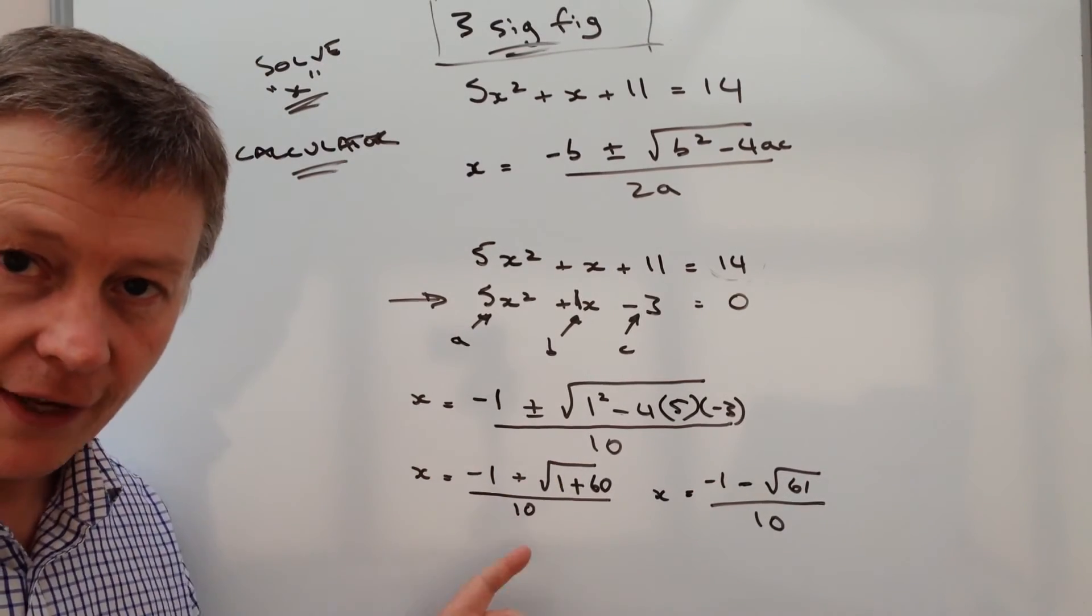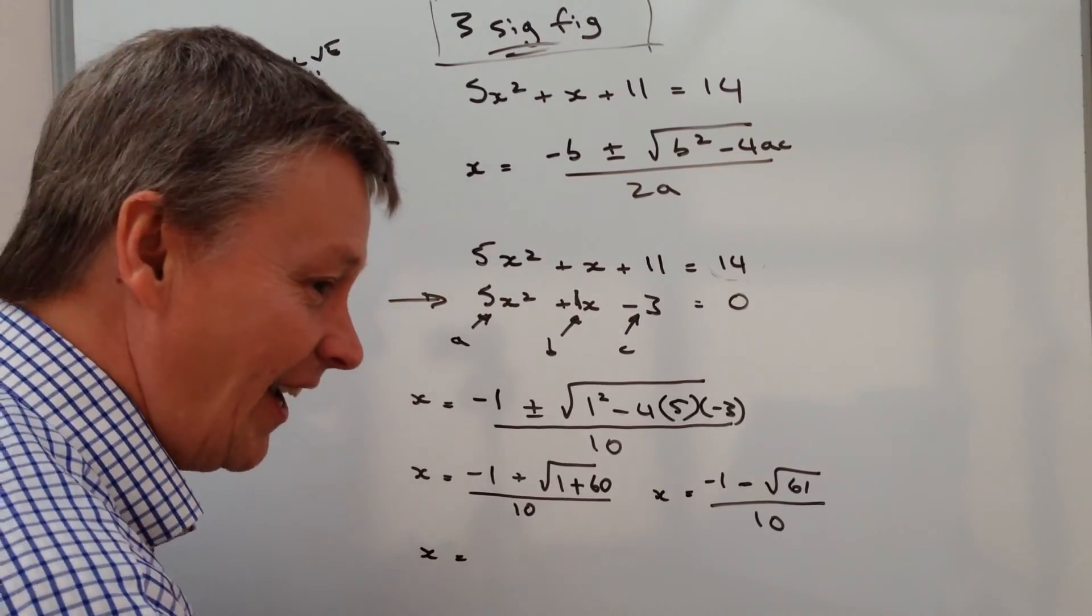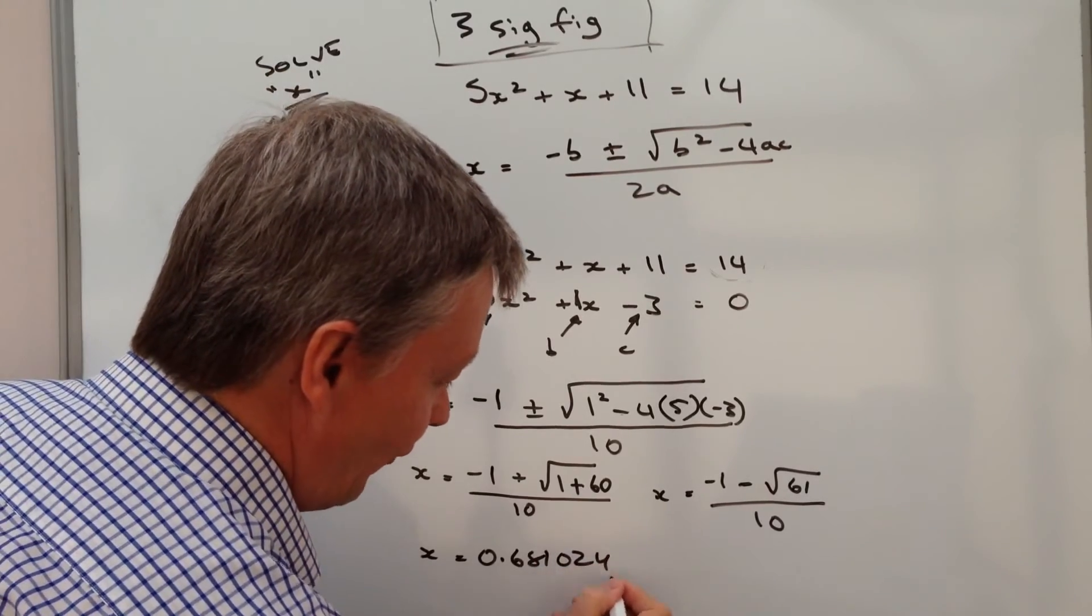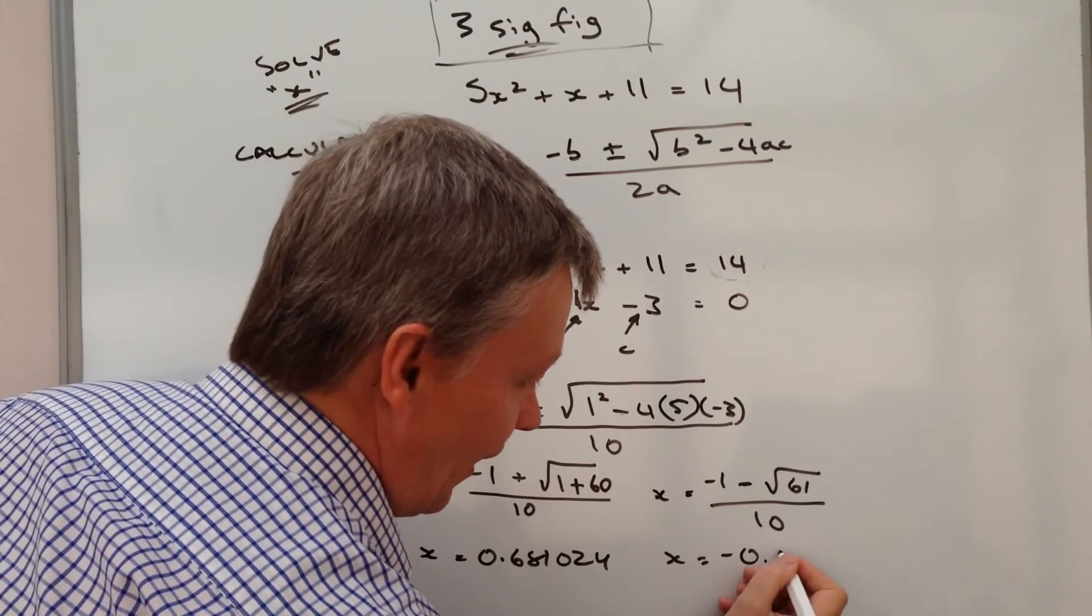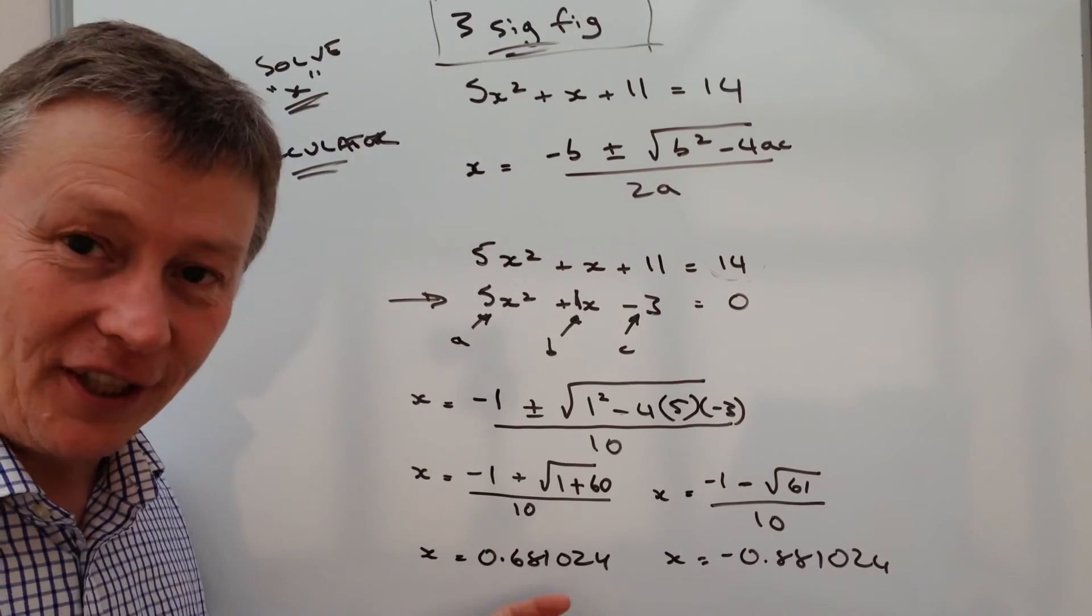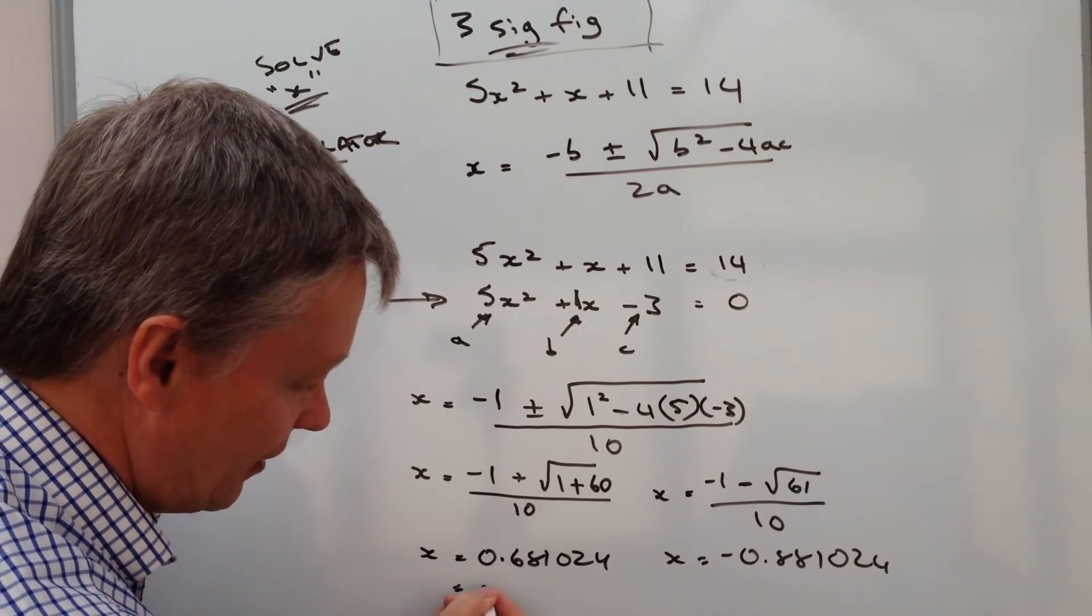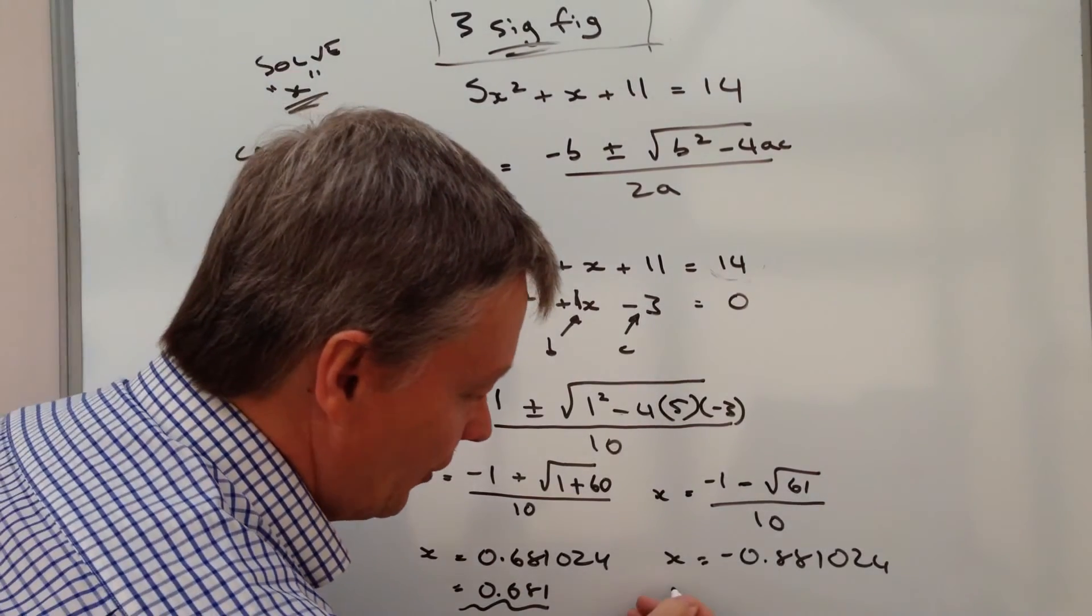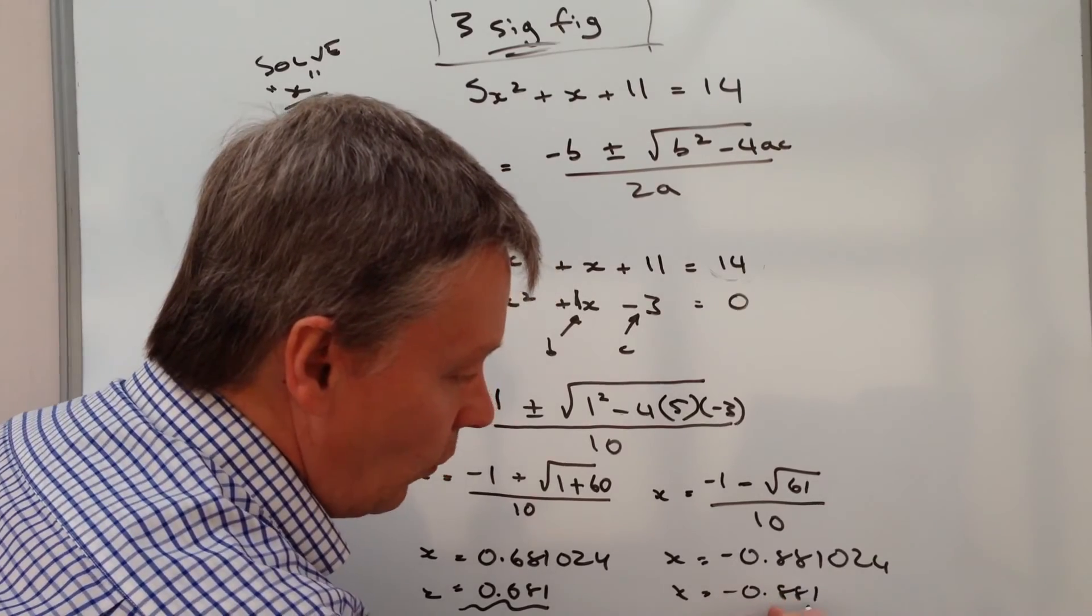If you put those two numbers into your calculator, you're going to get two values, one of which x equals 0.681024, and x also equals minus 0.881024. You'll get these sorts of calculations particularly with these kind of questions. So to three significant figures, the value of x is going to be 0.681, and the value of x here is going to be minus 0.881.